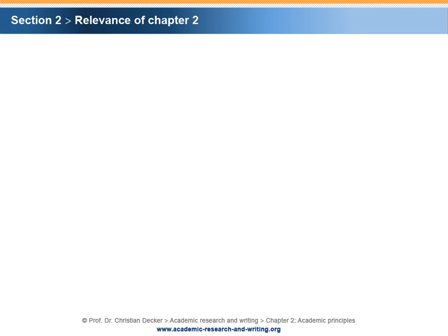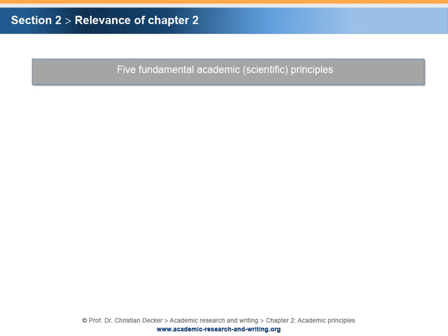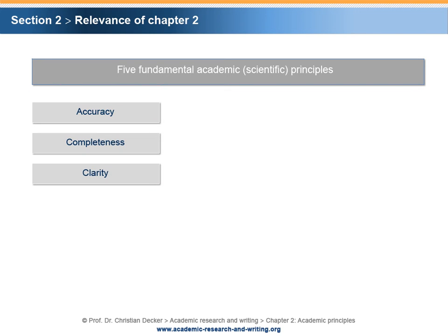The five fundamental academic or scientific principles to be addressed in this chapter are: Accuracy, Completeness, Clarity, Comparability, and Materiality.